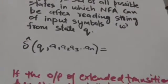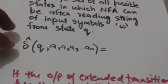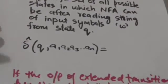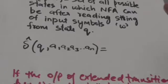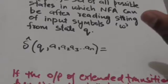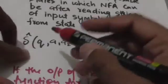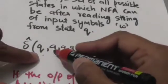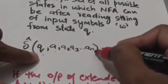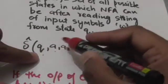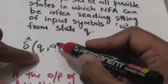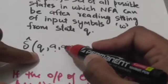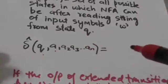How do we find the output of the extended transition function in the case of NFA with empty transitions, for present state Q and a string of input symbols A1, A2, A3, up to An?